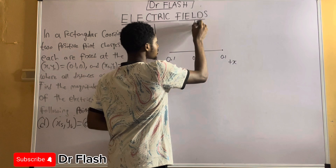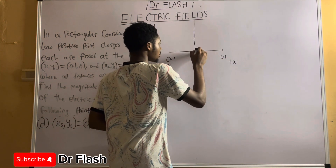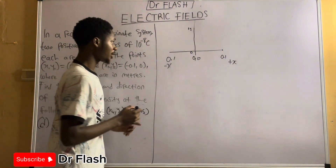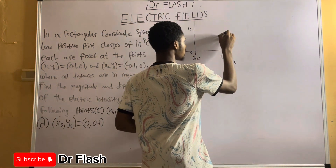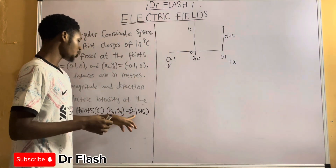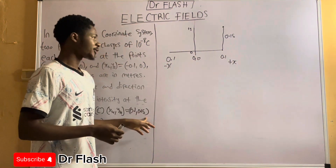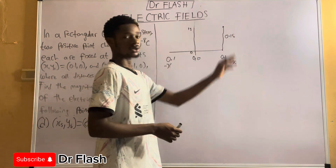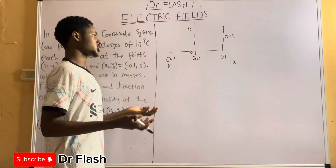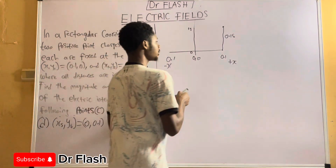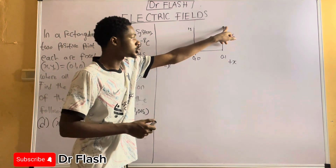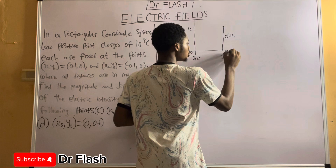From the origin on the positive y-axis, we trace 0.15. So 0.1 on the x-axis and 0.15 to the y-axis gives us this point. These diagrams are not drawn to scale, so you don't need a graph since nothing is to scale. We are asked to find the electric field intensity at this point due to the two charges.